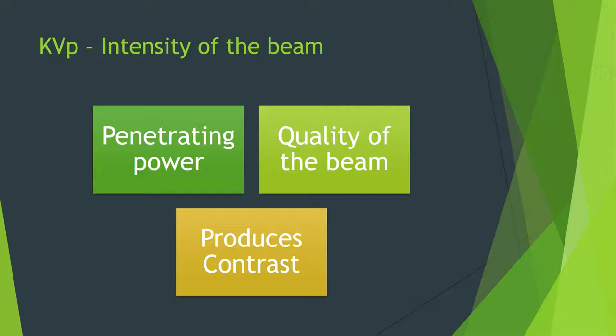As rays pass through, they're attenuated and selectively block areas of radiation on an image — that's what produces your image. If you've got a very dense object like lead with a high atomic number, it's going to stop those photons passing through, giving you a white image — an absence of rays in that area. The intensity of an X-ray beam is basically what kilovoltage potential is: the penetrating power of the photons. It affects the quality of the beam and produces contrast — the variance between the main radiographic densities of air, soft tissue, bone, and water.